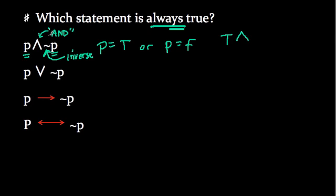then we have true and what? Well, true and the inverse of true, false. Or we could have false, because P could be false, and true.